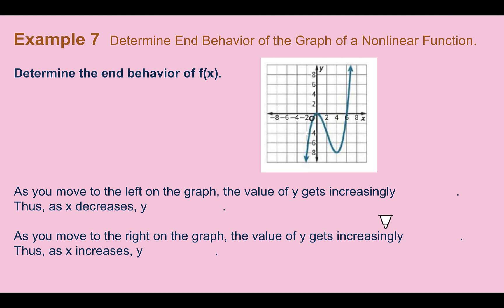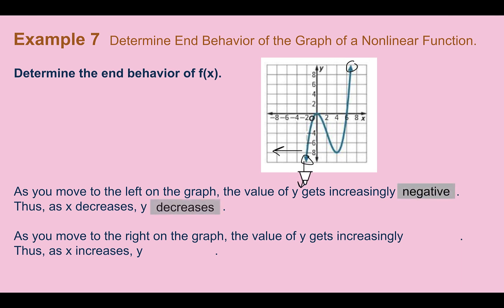Example 7: Determine the end behavior of the graph of a nonlinear function. This works the same way — we're just looking at the arrows at the end. For this one, as we move left on the graph, our function seems to be going down. So as x decreases, y also decreases. As we move to the right, our value is going up. So as x increases, y increases. Same process with nonlinear as it was with linear.